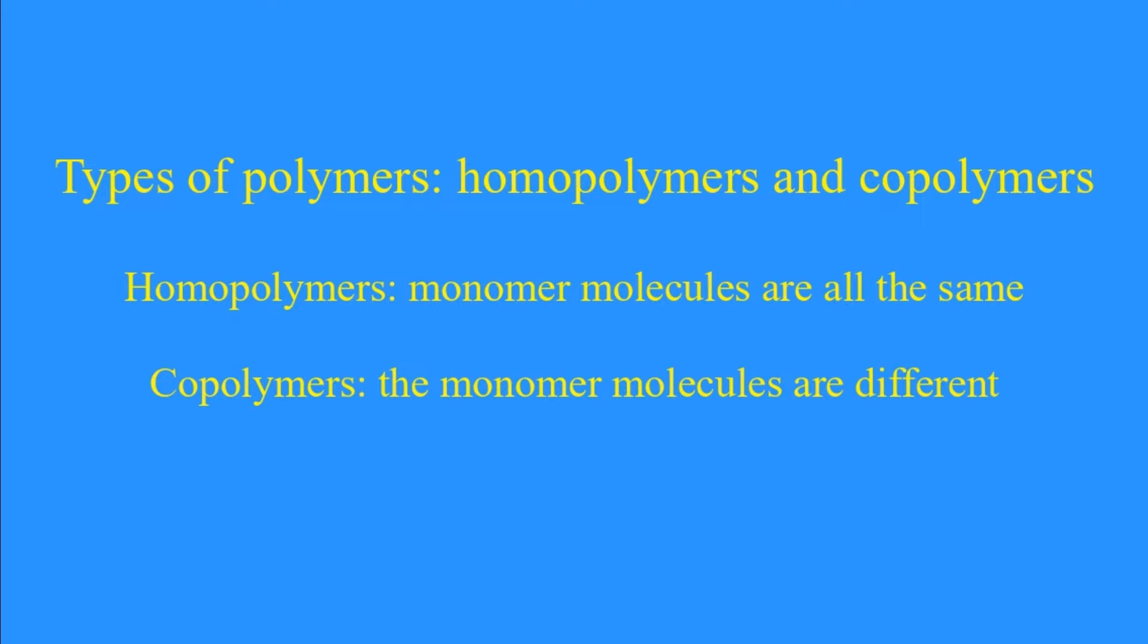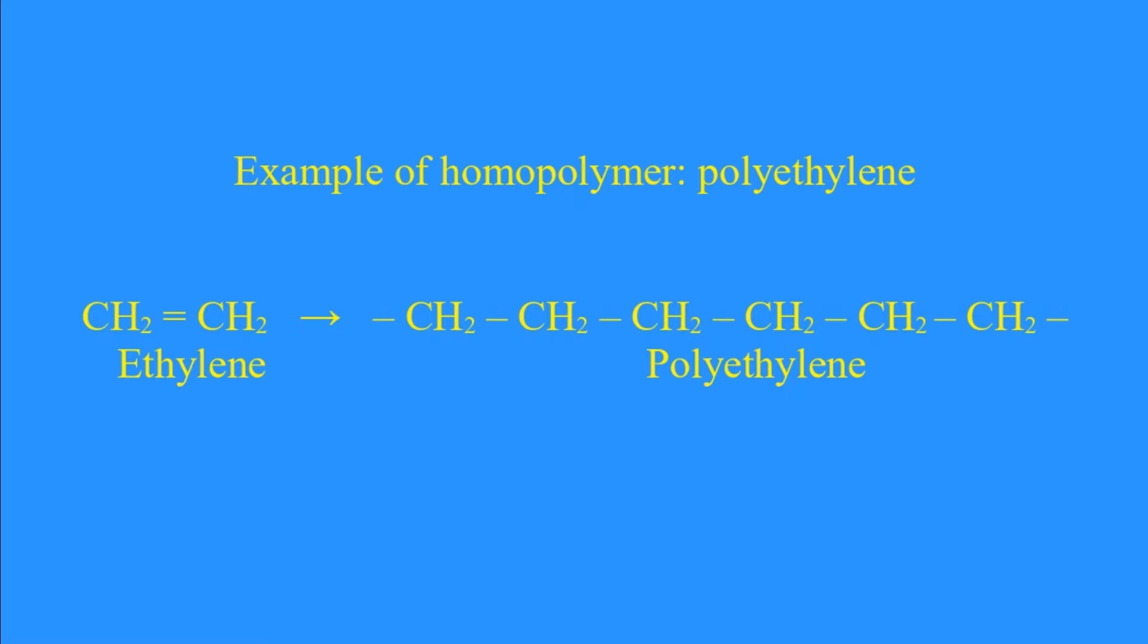There are two types of polymers: homopolymers and copolymers. In homopolymers, the monomer molecules are all the same. In copolymers, the monomer molecules are different.